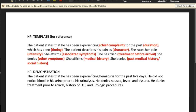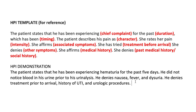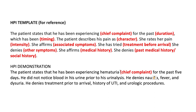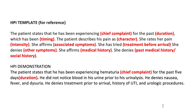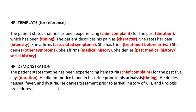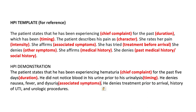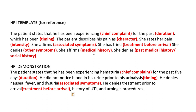Let's review our HPI. The patient states he has been experiencing hematuria — the medical term for blood in urine — for the past five days. Five days is our duration. He did not notice blood in his urine prior to the urinalysis; this is our timing. He denies nausea, fever, and dysuria — dysuria meaning pain with urination — which are our associated symptoms. He denies treatment prior to arrival. History of UTI is our medical history, and urologic procedures round out our past medical and social history.